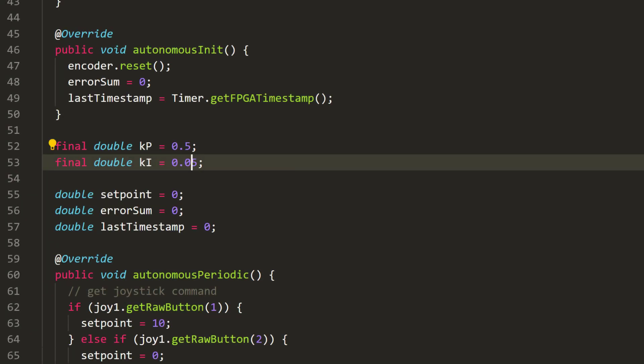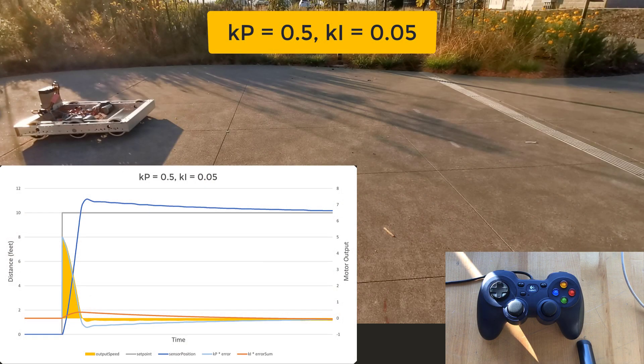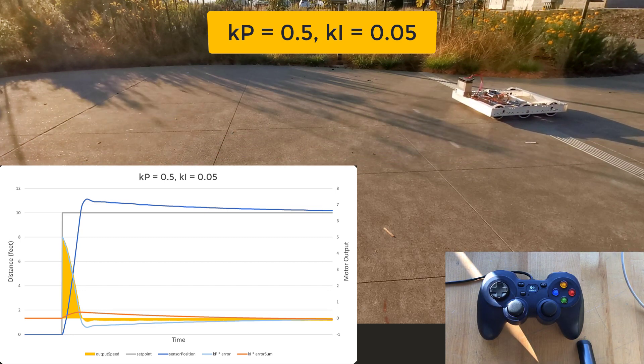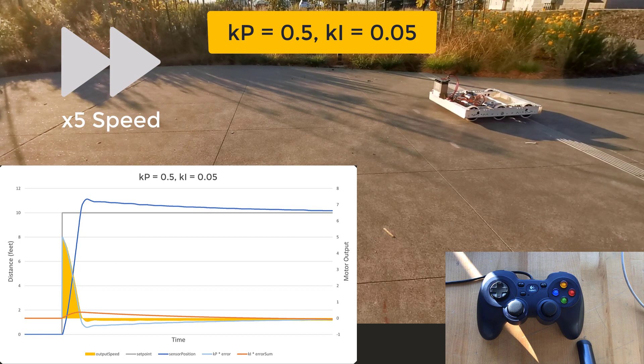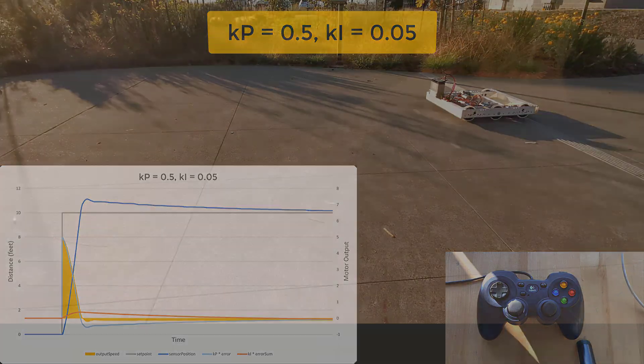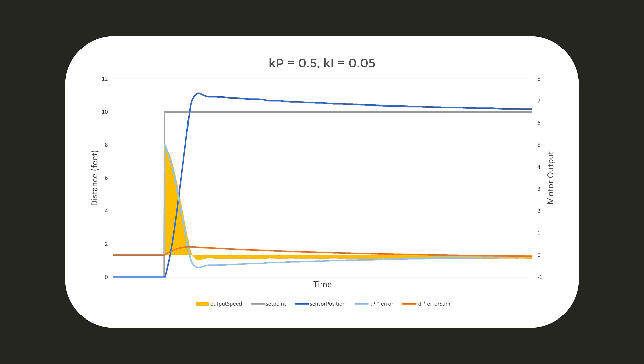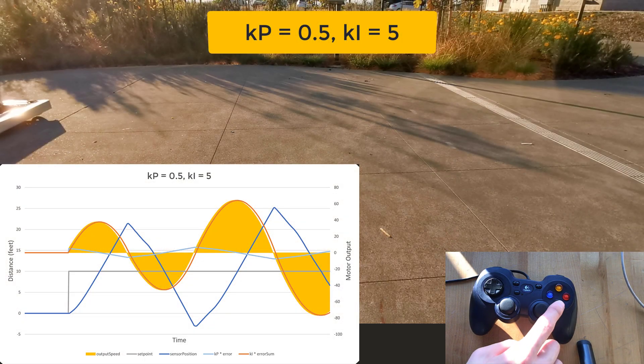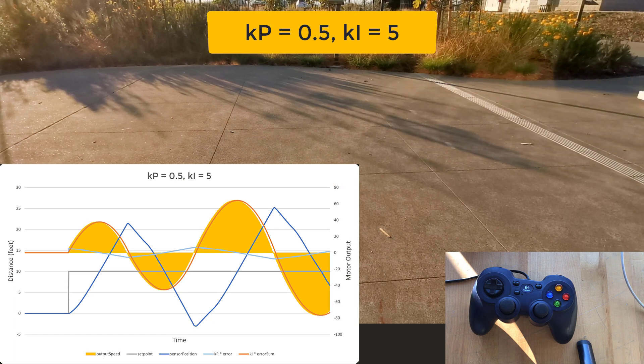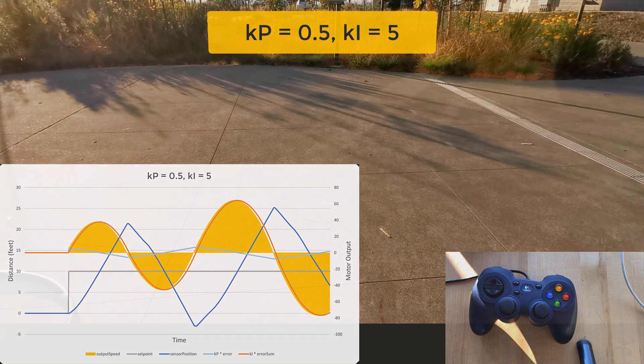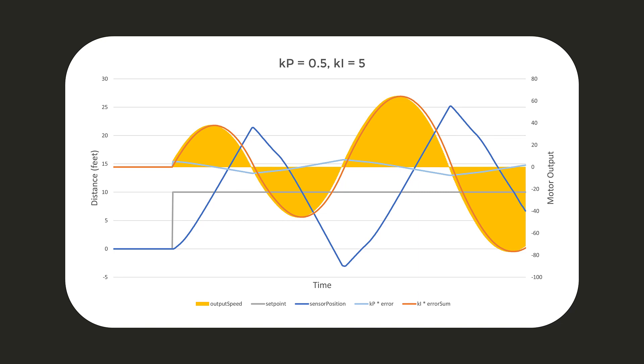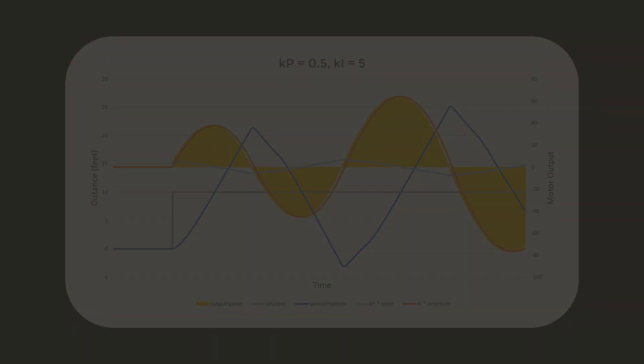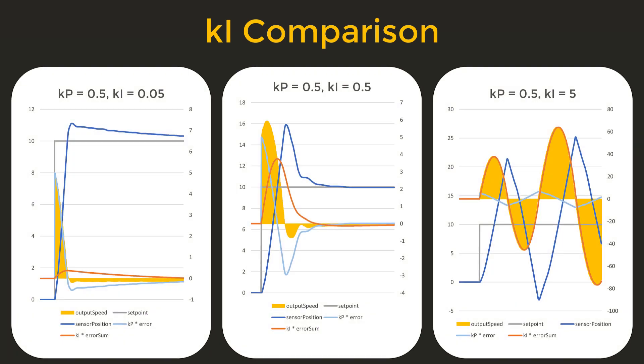Let's try decreasing KI to 0.05 and retry. From the graph, we can see the overshoot was smaller because the error sum had less output. But the robot will eliminate the error slower as well. Let's try setting KI to 5 and see what happens. Here the robot had an increase in oscillation, meaning the amplitude increased with every period. This can be very dangerous because the robot will oscillate more the longer we leave it.